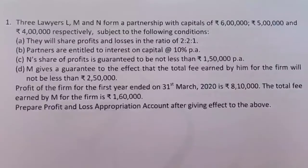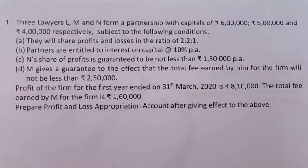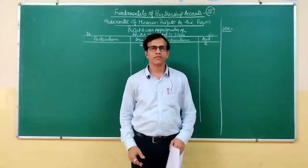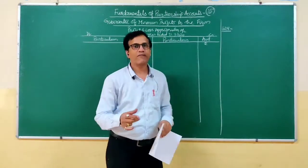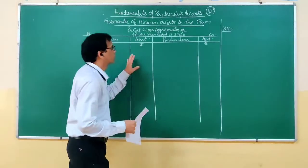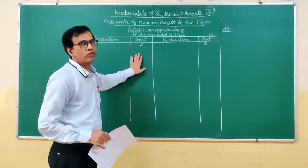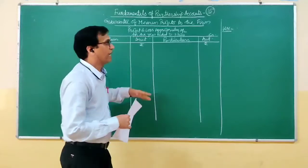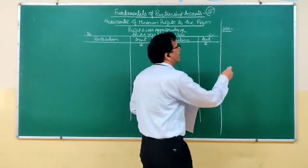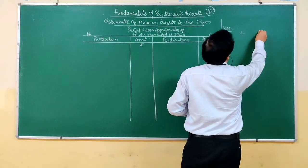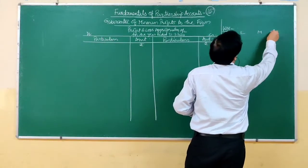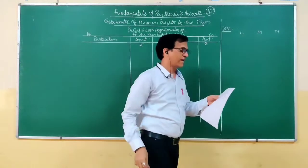Prepare the profit and loss appropriation account giving effect to the above. There are three partners: L, M, and N. Their capital amounts are six lakhs, five lakhs, and four lakhs respectively, with a profit sharing ratio of 2:2:1. Interest on capital at 10% gives: 60,000 for L, 50,000 for M, and 40,000 for N.